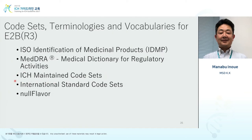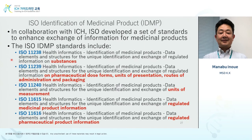Terminologies of E2B R3 are defined in ICH, and for that purpose, the ICH maintained code set is used. Next, international standard code sets — national codes and other important data could be used here. Last but not least, null flavor. So there are five code sets used in E2B R3.